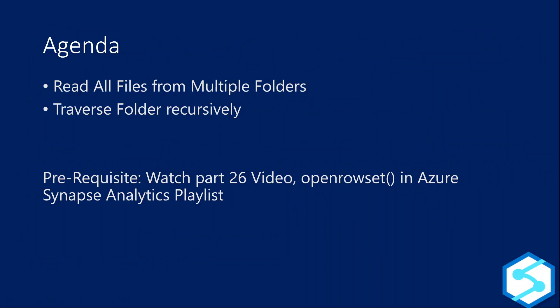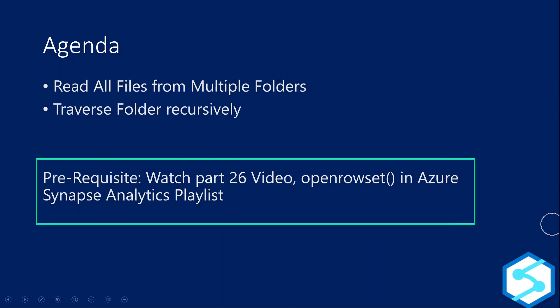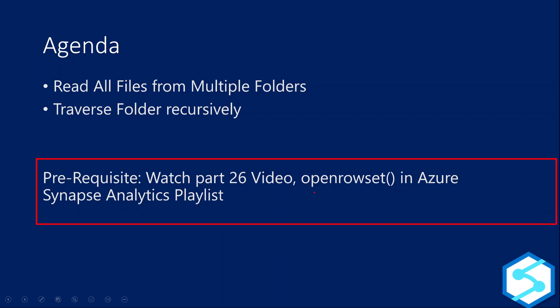There are two scenarios we are going to discuss. The first scenario is how to read files from multiple folders. The second scenario is traversing folders recursively — that means if a root folder has multiple subfolders, how to read files from all of them. The prerequisite is to watch part 26 of the Azure Synapse Analytics playlist, where we explained the OpenRowset function we'll use to read data from files.